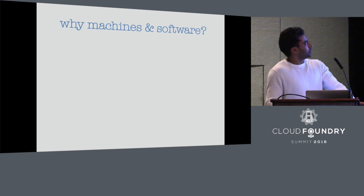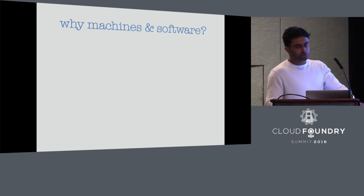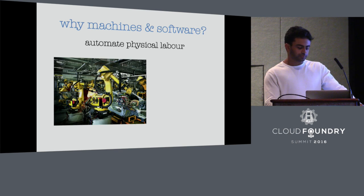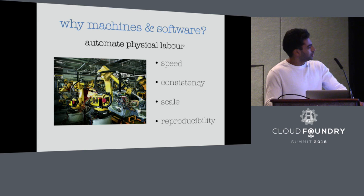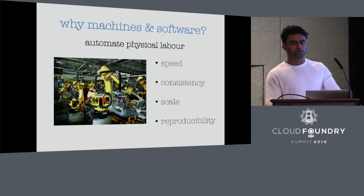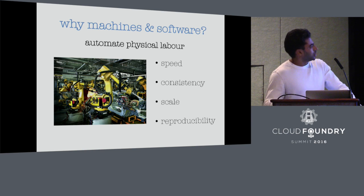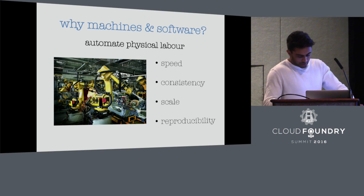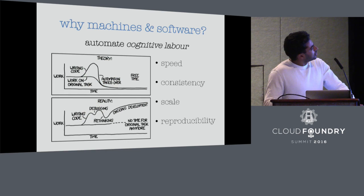What are some reasons why we do things with machines in the first place? One obvious reason: automate physical labor. Using machines, we can do things faster, more consistently, at higher scales, and more reproducibly. The things we just can't do physically — or if you get a human to do them enough times, there's going to be a lot of defects. People throw out their backs; you can only build skyscrapers so high before you need some sort of machine. We can also use software to automate cognitive labor.